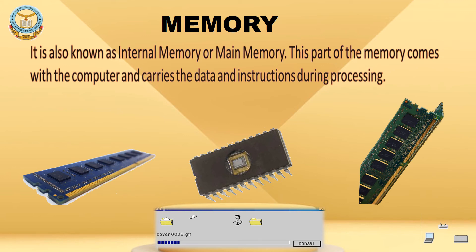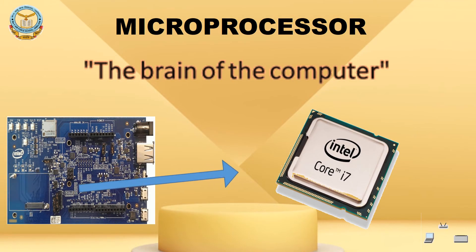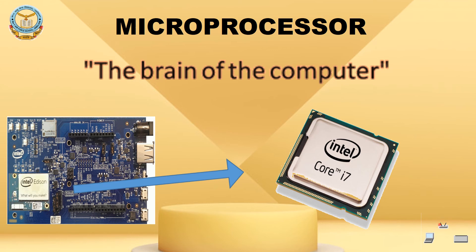Memory is also known as primary memory, and information stored in it is temporary and is lost when the power supply is switched off. Memory is classified into two types: RAM, random access memory, and ROM, read only memory. Microprocessor — the brain of the computer. A microprocessor is also called a logic chip; it contains all the functions performed by the central processing unit, or CPU, and it starts working when you turn your computer on. A microprocessor is designed to perform arithmetic and logic operations, including adding, subtracting, comparing two numbers, and other calculations. Megahertz is the unit of internal processor speed at which computer instructions are performed.